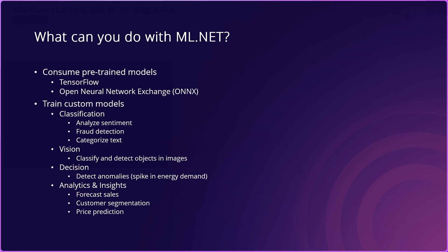In addition to consuming pre-trained models, you can also train custom models. Just to give you an idea — some of the things you can do with ML.NET: you can train custom classification models for scenarios such as sentiment analysis, fraud detection, and text classification. You can also train vision models that classify and detect objects in images. You can build models for decision support, detecting anomalies such as spikes in energy demand. And there's a variety of analytics and insights models for things like forecasting sales, performing customer segmentation, and doing price prediction.